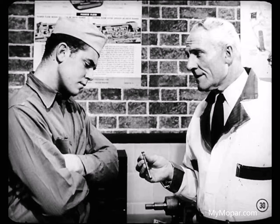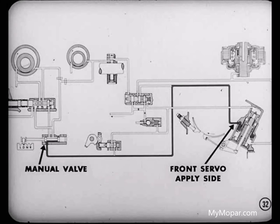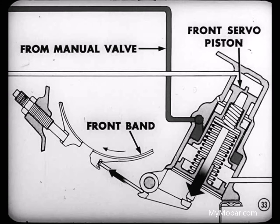Now, you'll remember we said we needed a valve to direct the flow of oil. We call that valve the manual control valve. This manual control valve is moved by linkage from the selector lever on the steering column. Movement of the manual control valve from neutral to drive directs the flow of oil to the operating units. Moving the manual valve to drive position uncovers an oil passage to the apply side of the kick-down or front servo. This permits oil pressure to move the servo piston, applying the front band.